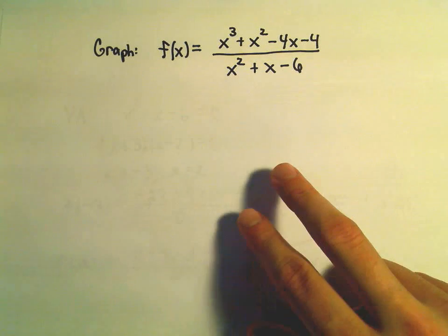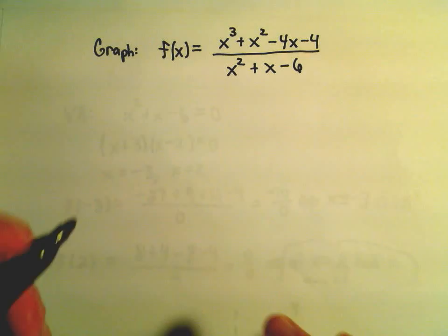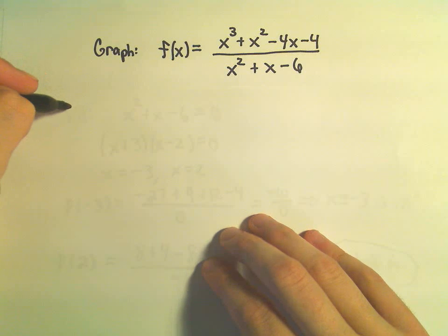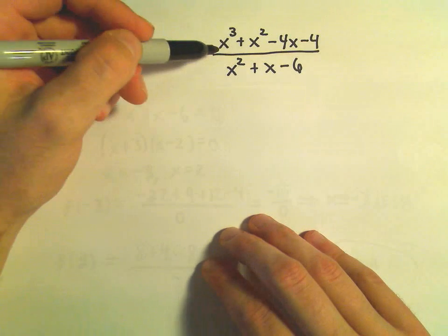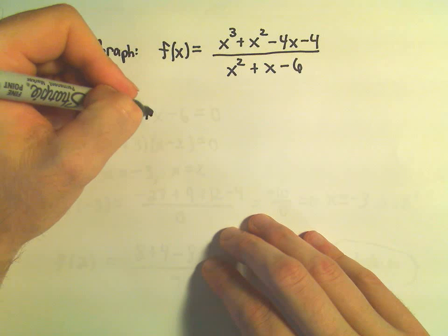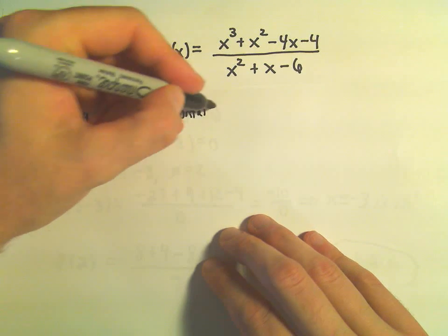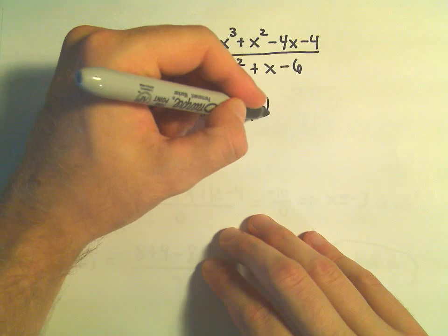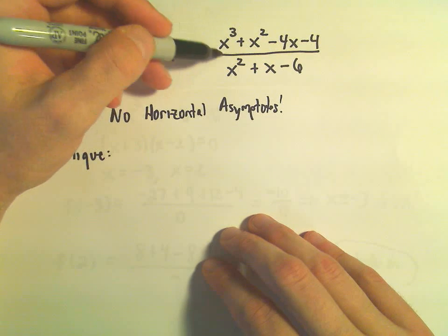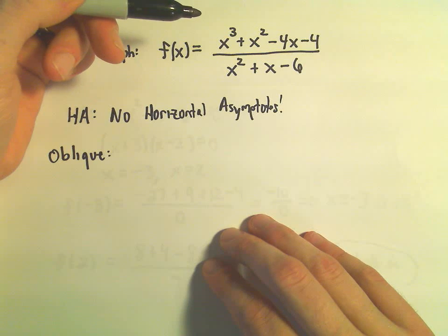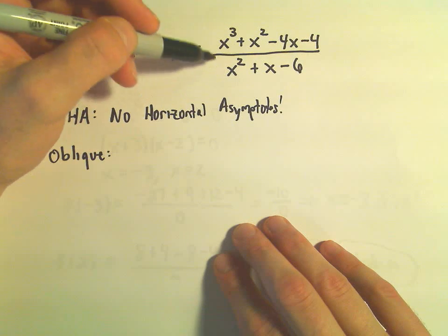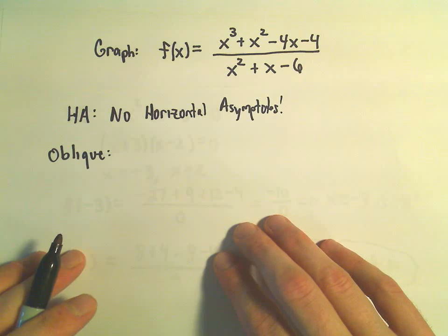Let's also think about asymptotes — I think of them as little fences that keep the graph trapped. For horizontal asymptotes, notice the degree of the numerator is bigger than the degree of the denominator, so there are no horizontal asymptotes. But there will be an oblique asymptote, since the degree of the numerator is exactly one larger than the degree of the denominator. To find the oblique asymptote, we'll do long division.